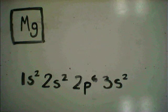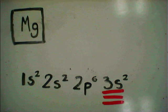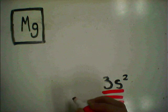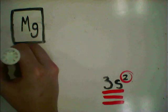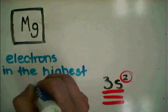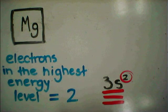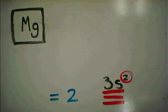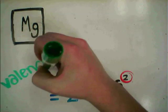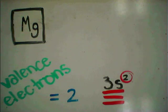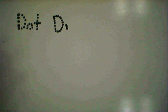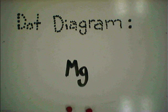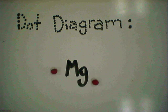But we're not finished. For the final step, you look at the highest energy level — in this case, three. From here, you take the electrons in that level. You could write some lengthy description if you really wanted to, or you could just write valence electrons.